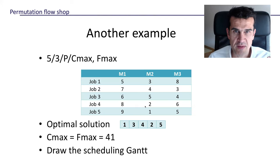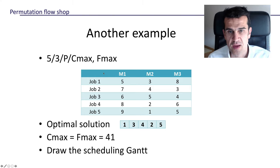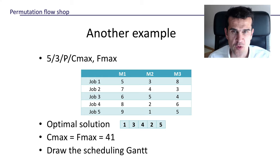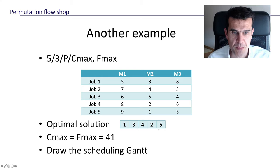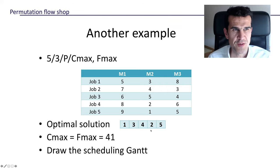You can practice this by solving a problem with five jobs and three machines — again a permutation flow shop — where we're interested in minimizing the makespan. One optimal solution has a C-max of 41. Since there are only five jobs, there are 120 possible sequences, so it's feasible to check all of them. We recommend you try drawing the Gantt chart for this sequence. Keep it up — see you later!